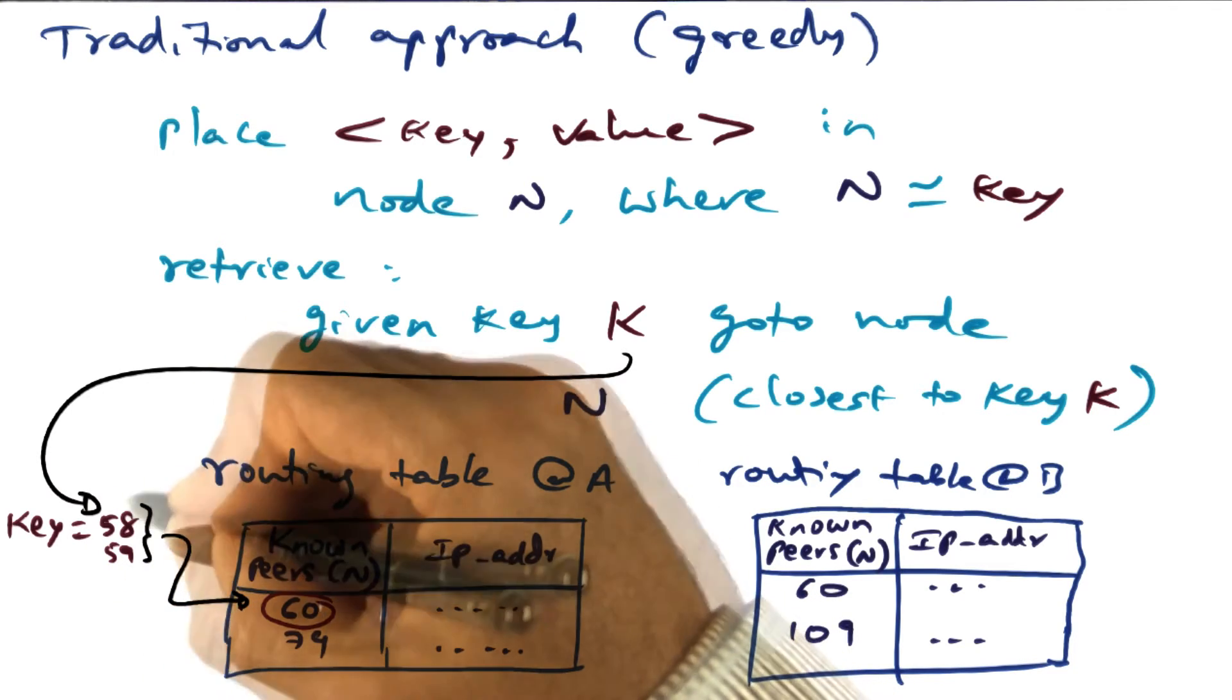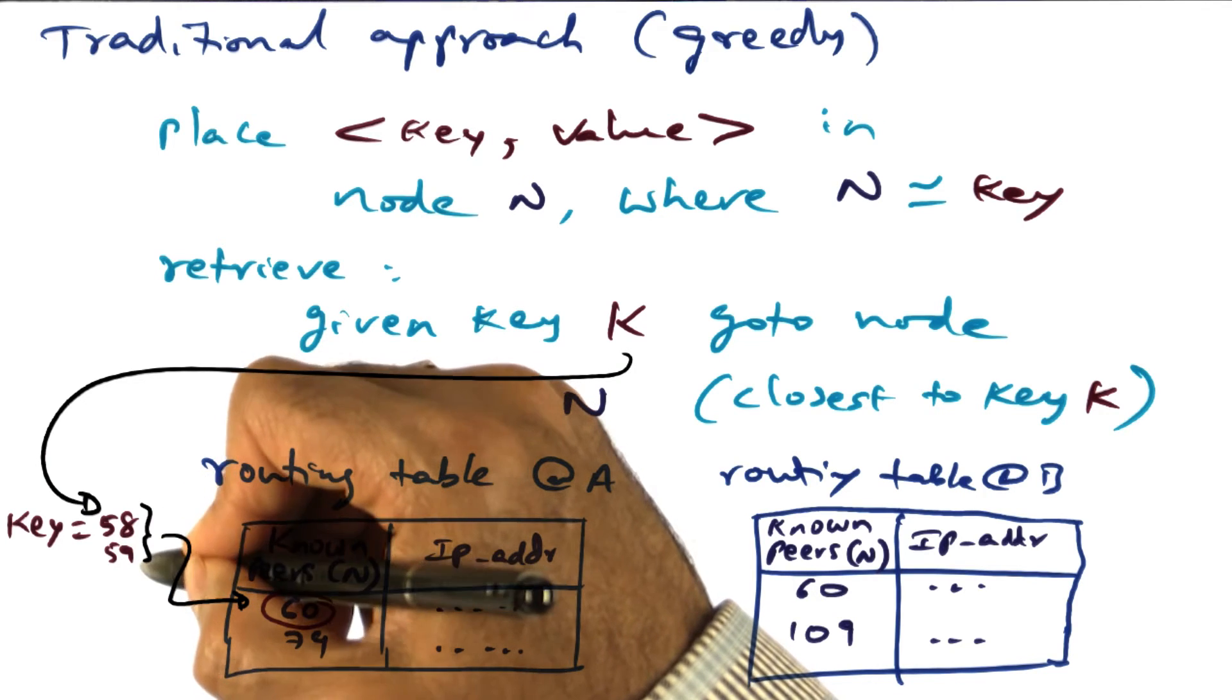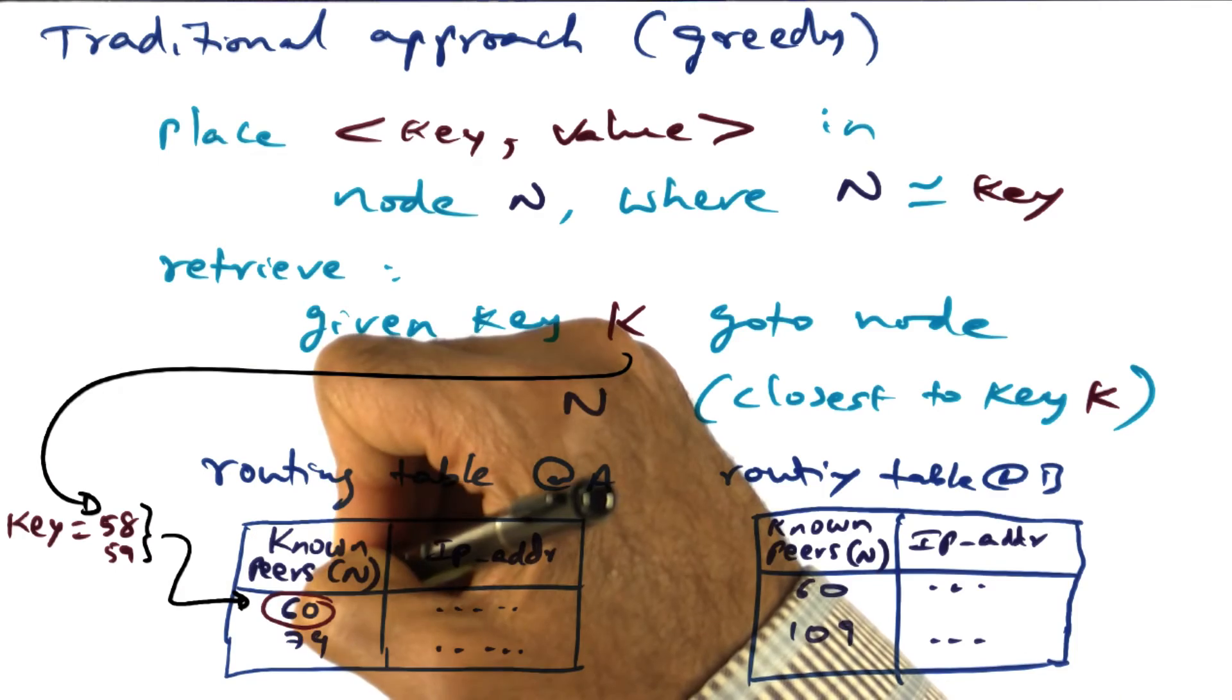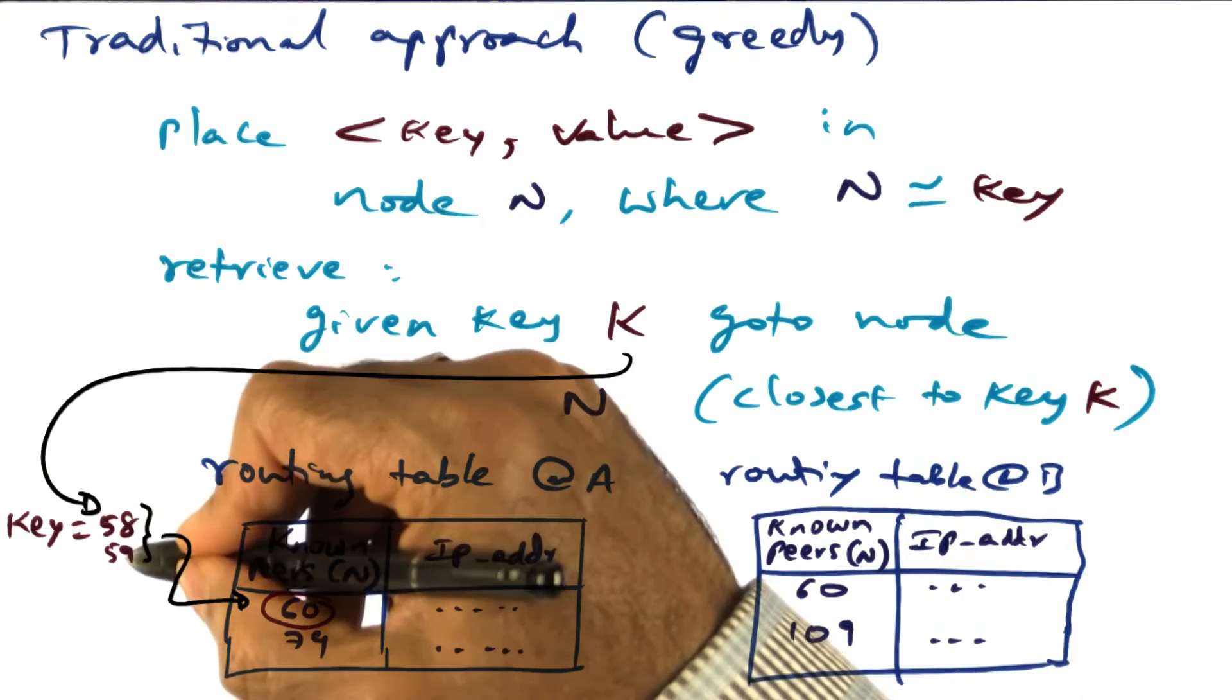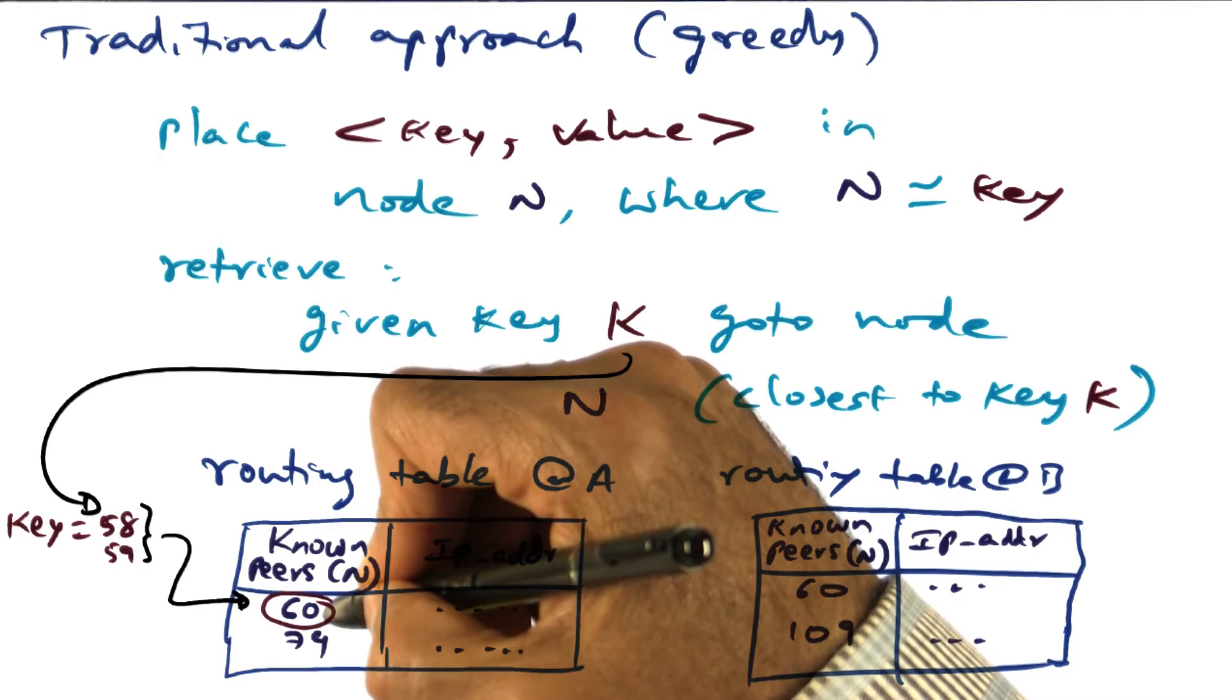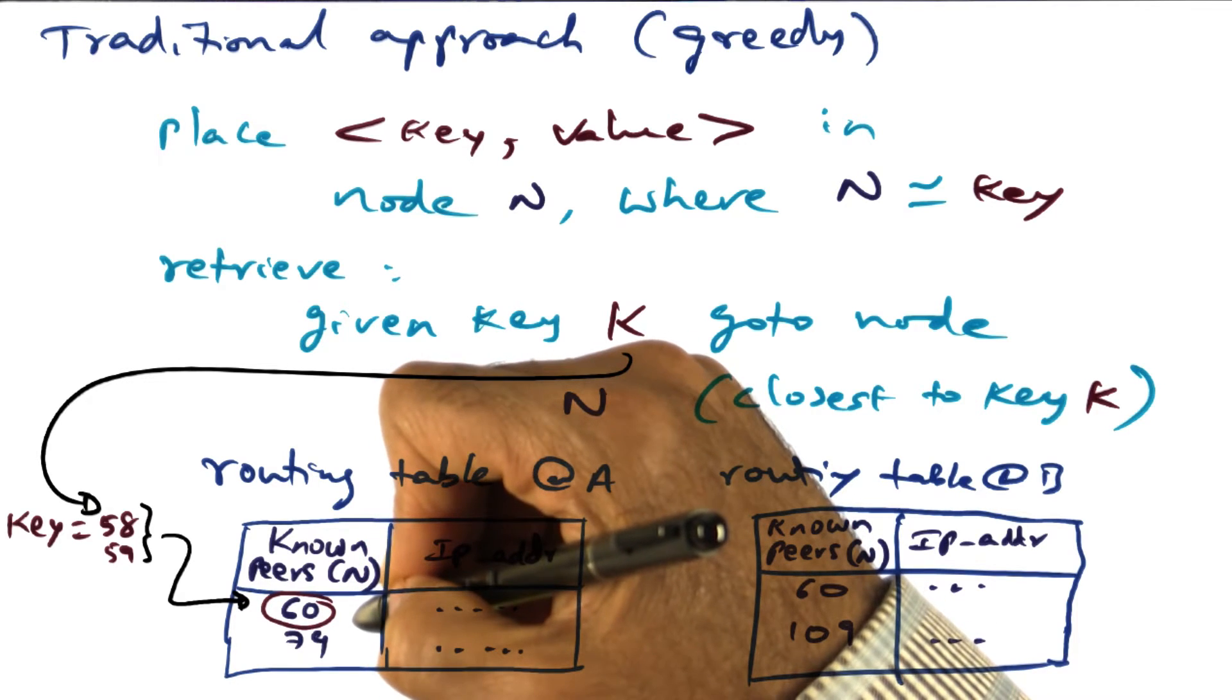So what I'm going to hope is that, if I'm looking for this particular key, 58 or 59, good chance that the key value pair that corresponds to 58 or 59 is stored in this node ID 60. So that's the one that I'm going to communicate with.